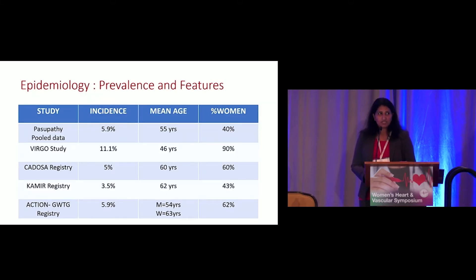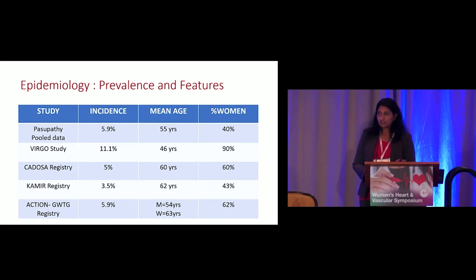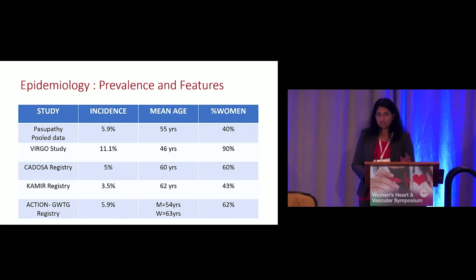Regarding epidemiology, prevalence, and features: from pooled data and registry trials, the incidence is anywhere between 3.5 to 11% of all acute MI presentations. These are usually patients aged 45 to 65 years, and registry studies have shown women present more commonly with this symptomatology. In one registry, as many as 90% of women presented with MINOCA or RINOCA.